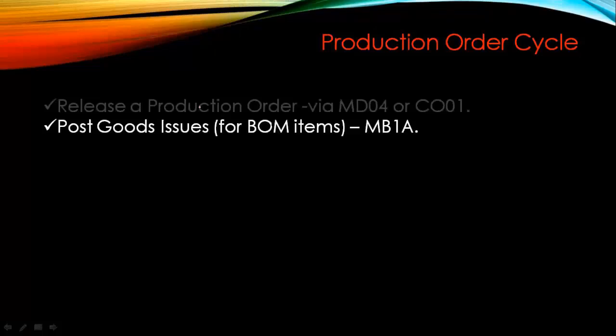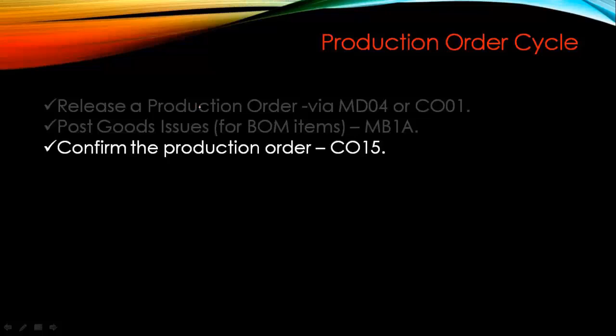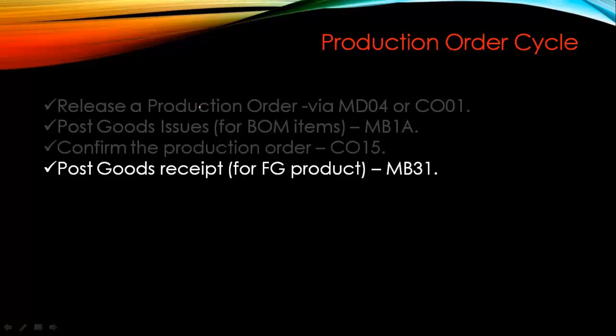The second step is to post goods issue — that means all the BOM items needed to produce the finished good are issued. We post the goods issue for the BOM components. The third step is to confirm the production order using transaction CO15, which means production order processing has been completed. Finally, the last step is to post goods received using transaction MB31 to receive the finished goods into stock.